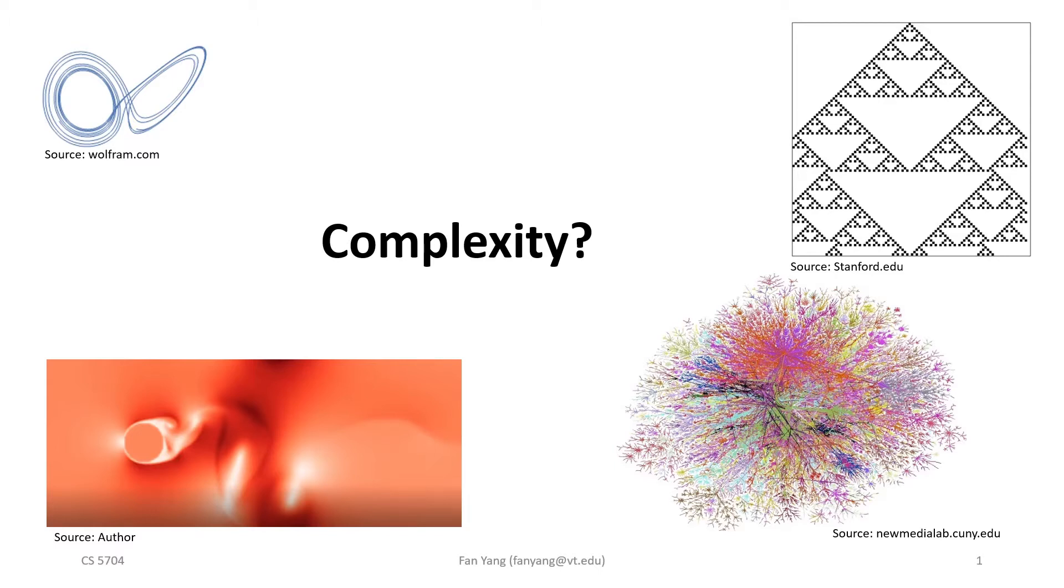What goes through your mind when you think about complexity? If you are thinking about the intricate structures in biology, or vast social networks, or difficulties in predicting outcomes, you are absolutely on the right track.